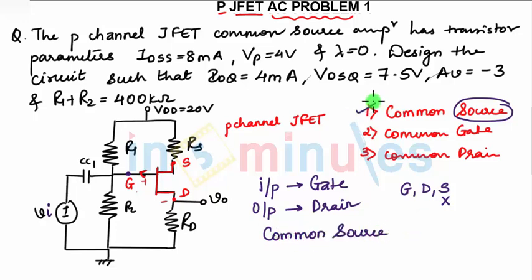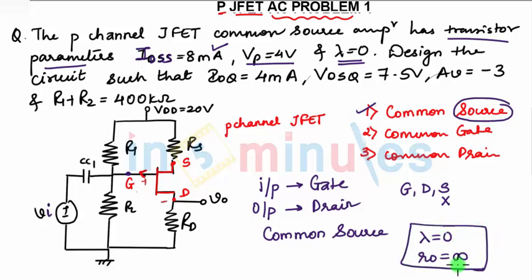Now the question tells us that the transistor parameters are: IDSS, that is drain to source saturation current, is 8 milliamperes. Pinch-off voltage is given as 4 volts. Lambda is given as 0. Since lambda is 0, it indicates your output resistance is infinite, so we need not consider the output resistance in the analysis.